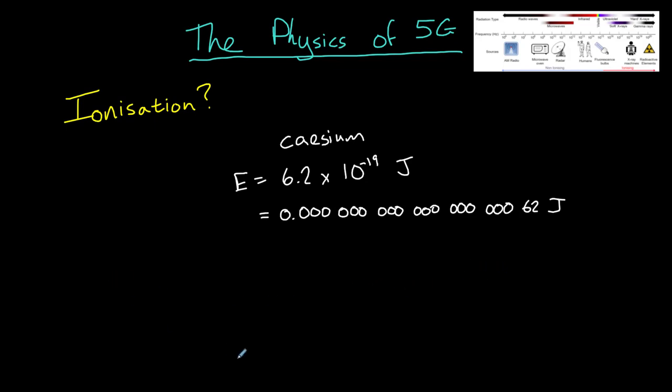5G uses a similar range of frequencies to Wi-Fi, going up to around 3.6 gigahertz, which means that it's microwave radiation. The Planck-Einstein equation allows us to calculate the energy of each photon of 5G microwave radiation. So it's a simple equation: E equals HF.